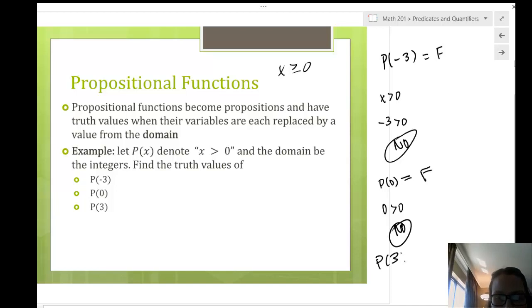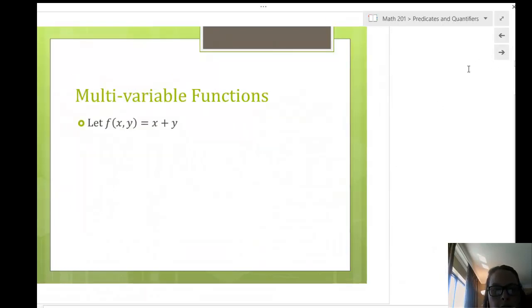Alright, P of 3, P of 3. Plug 3 into our predicate. 3, our predicate statement. 3, greater than 0, definitely, yes, right? So, this is true. So, you do some more practice here with the quiz and stuff after these few more slides.